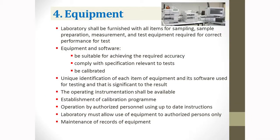The next point is equipment. Your laboratory shall be furnished with all items of equipment or instruments needed to carry out your test methods — this relates to sampling, sample preparation, and measurement. Software also belongs to equipment. Nowadays instruments have more and more software, and this should always be included. Equipment and software must be suitable for achieving the required accuracy.